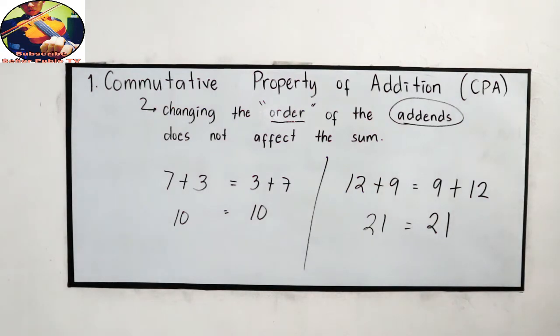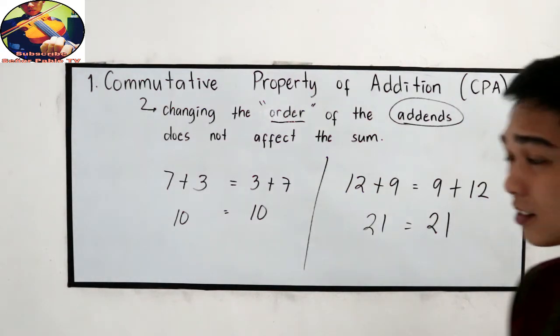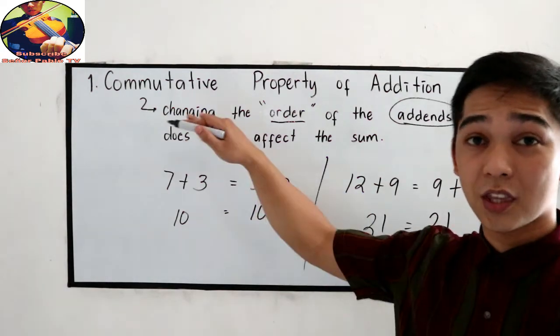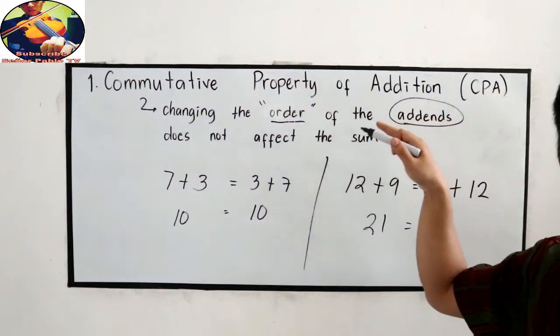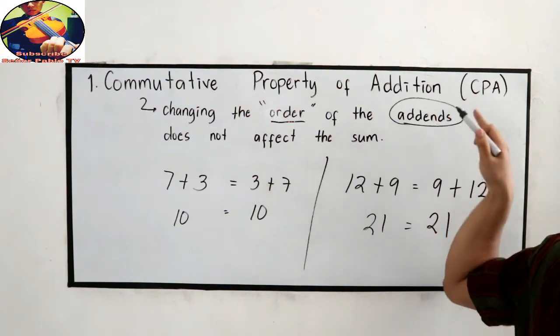Again, what property is this? Commutative property of addition, or the CPA.